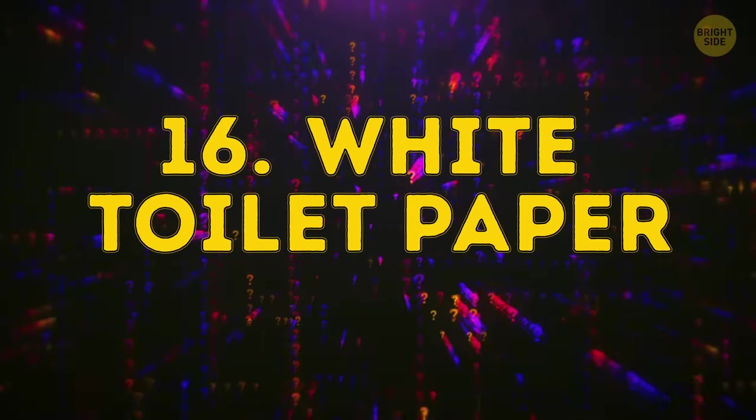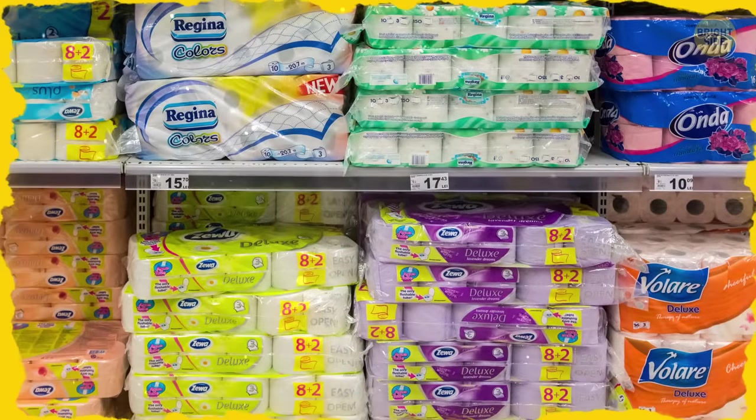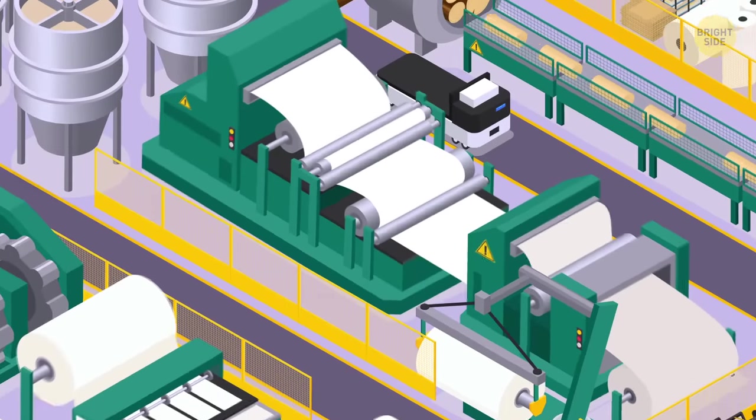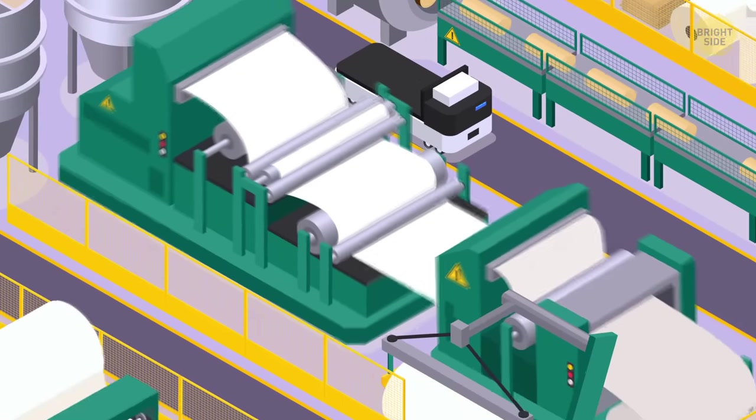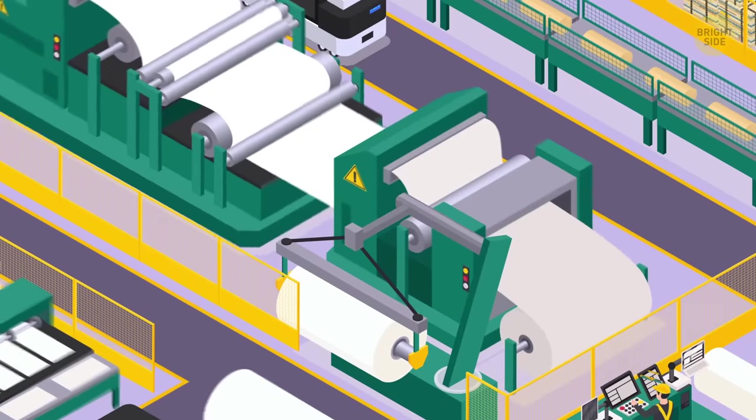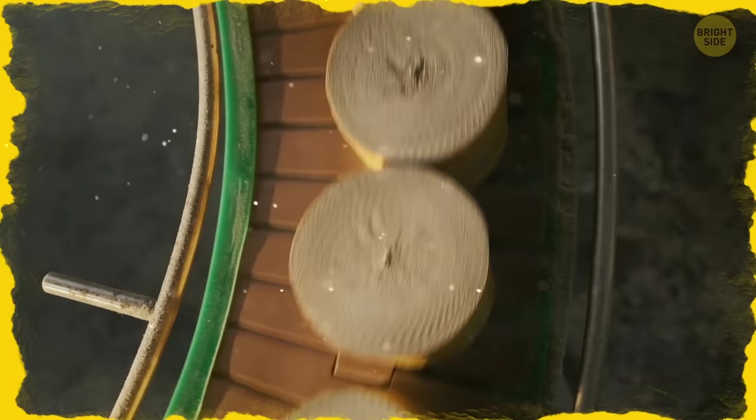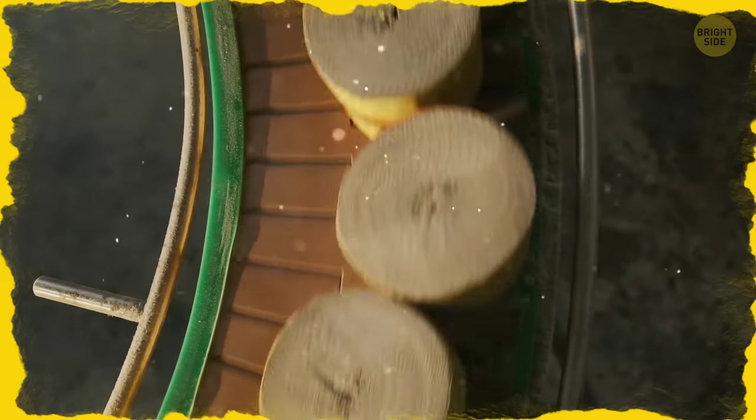White toilet paper. Maybe you've seen beige or brown toilet paper in the health food store? It's beige because the cellulose fibers that make up toilet paper are naturally white, but the glue holding them together is generally beige. Some producers feel it's more natural, economic, and maybe even healthful to leave it that way.